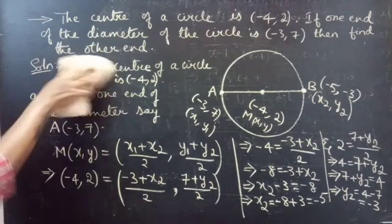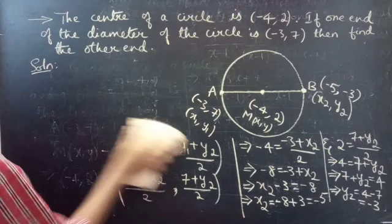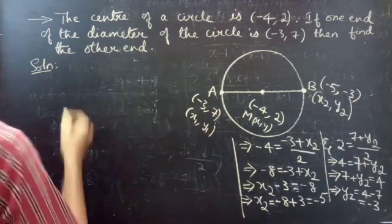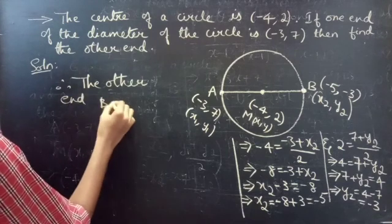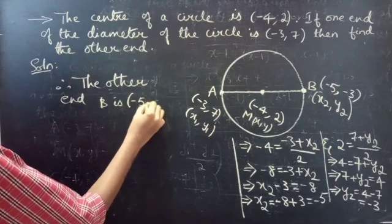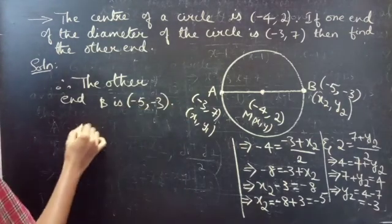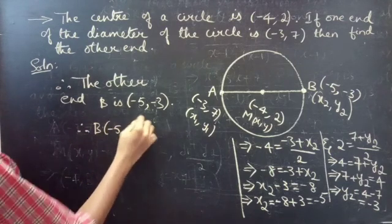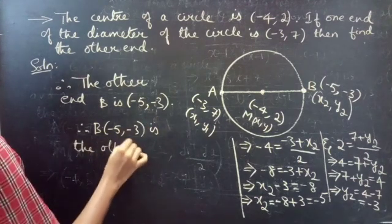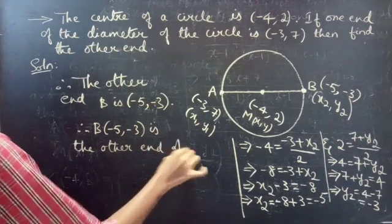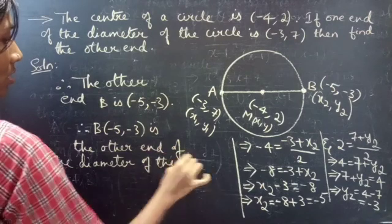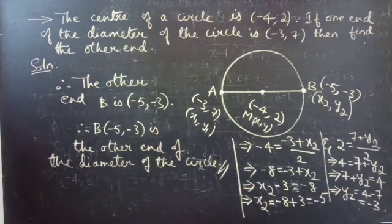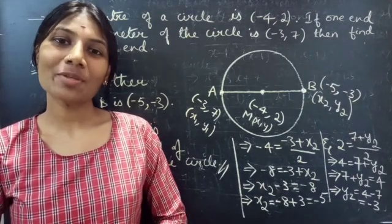So we got the other endpoint B. Therefore, B equals minus 5 comma minus 3 is the other end of the diameter of the circle. So this completes the problem. Hope you will understand. We will see you in the next video. Until then, bye-bye.